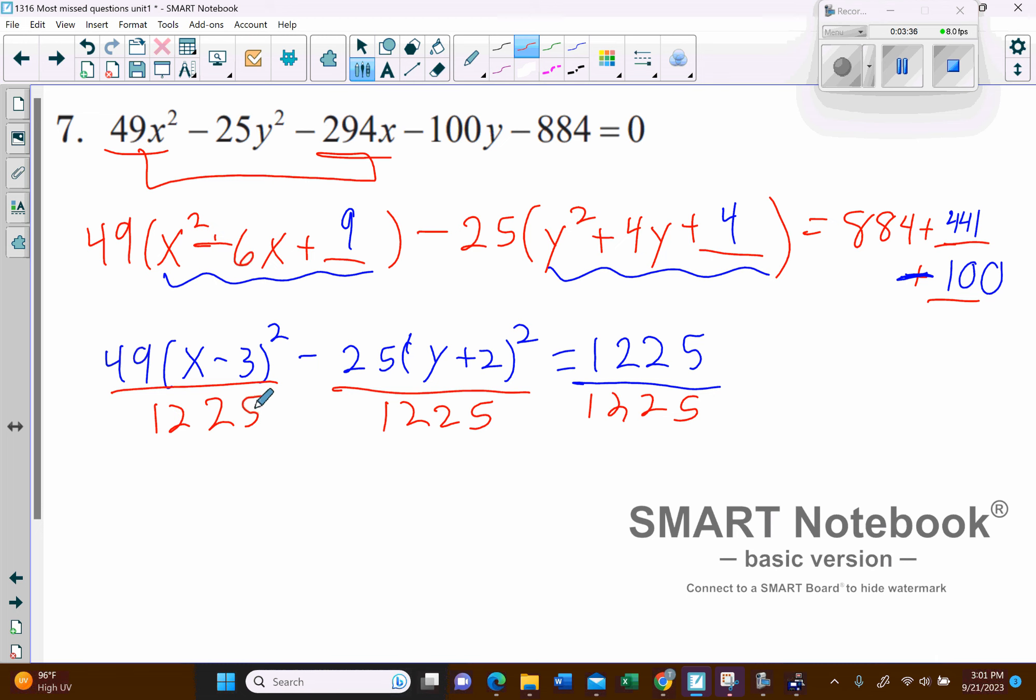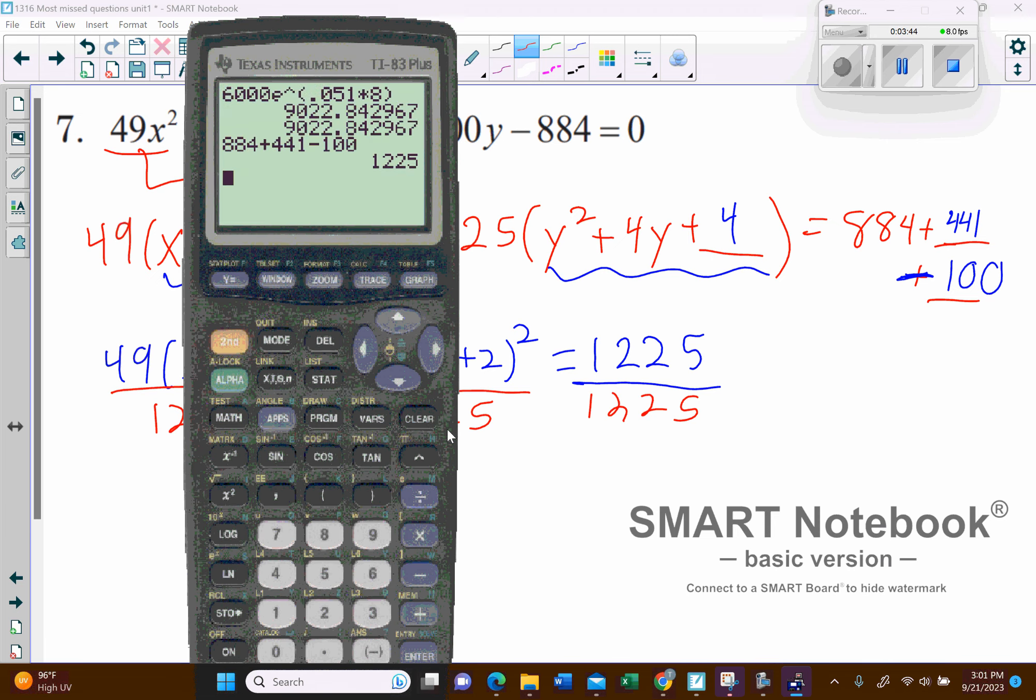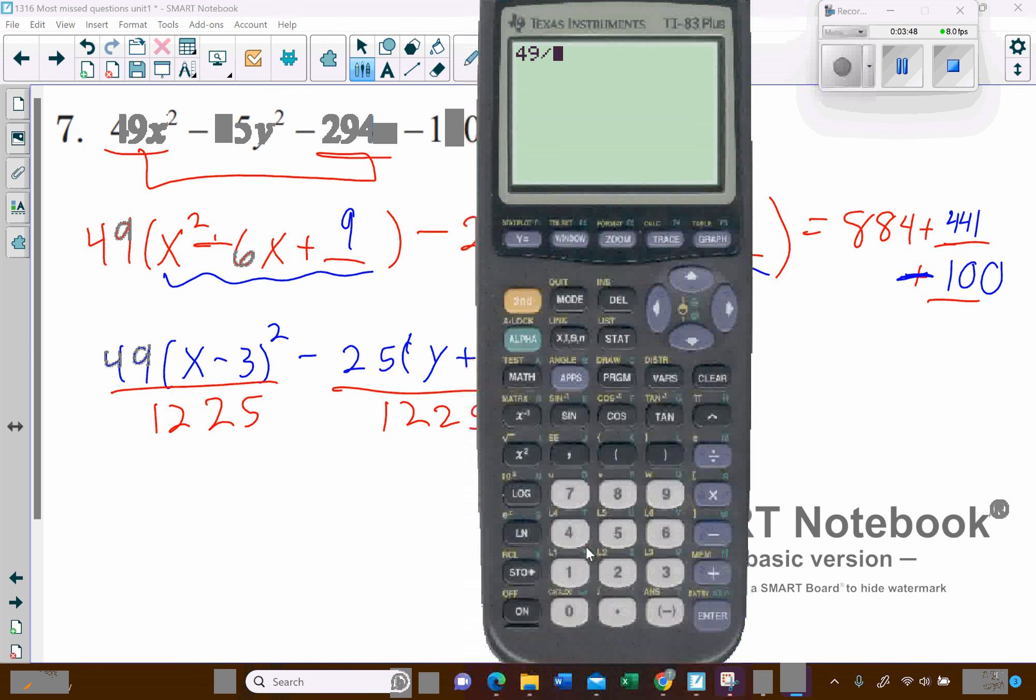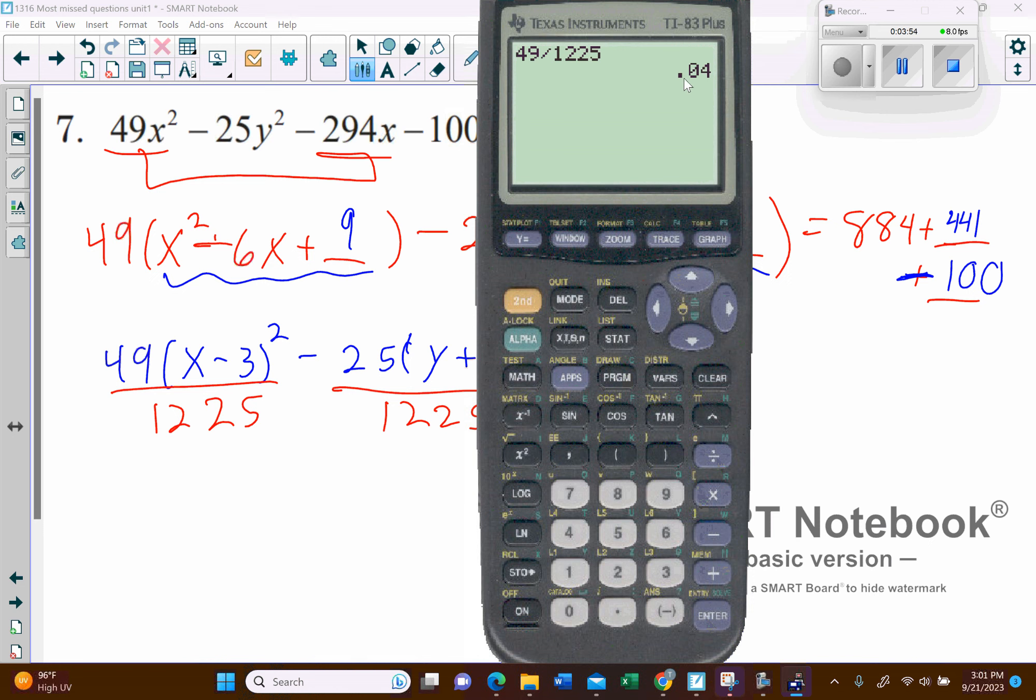And so, let's see, 49 into 1225, let me see, I'm going to pull my calculator. So 49 divided by 1225, and if you have one of these calculators, I'm going to show you a nice little feature here. So I got 0.04, but I really, I don't want decimals. So if I press math, enter, enter, it'll go ahead and convert it to a fraction for me.